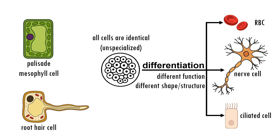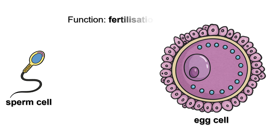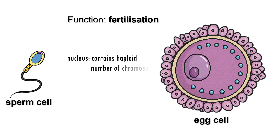To better understand what a specialized cell is, let's take a closer look at a sperm cell and an egg cell. The role of a sperm cell is to deliver genetic material to an egg cell for fertilization. To carry out this function, both sperm and egg cells have several adaptations. For example, each nucleus contains only half the normal amount of genetic material, which is important because the two nuclei must combine to form a complete set.